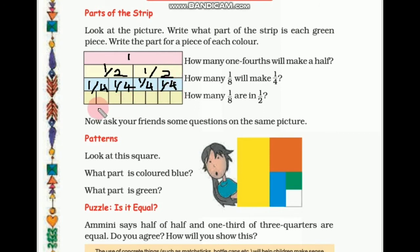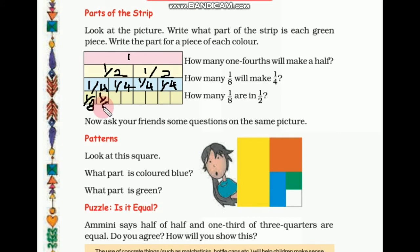So 1 fourth part. And now again this 1 fourth is divided into 2 pieces, and this 1 fourth also divided into 2 pieces. That means 2 one-eighths will make 1 fourth. So 1 upon 8th. Here also we can write 1 upon 8th. This also 1 eighth.